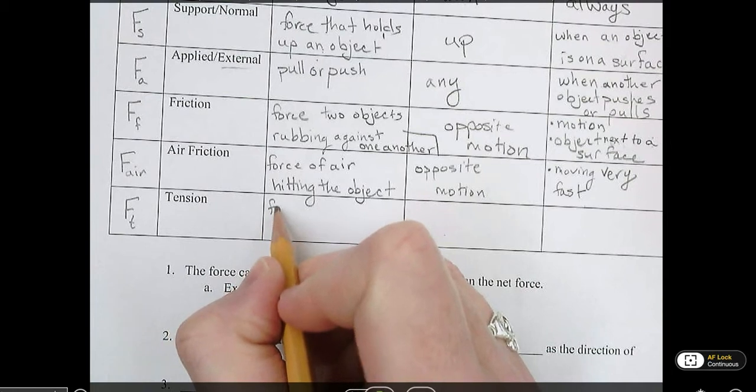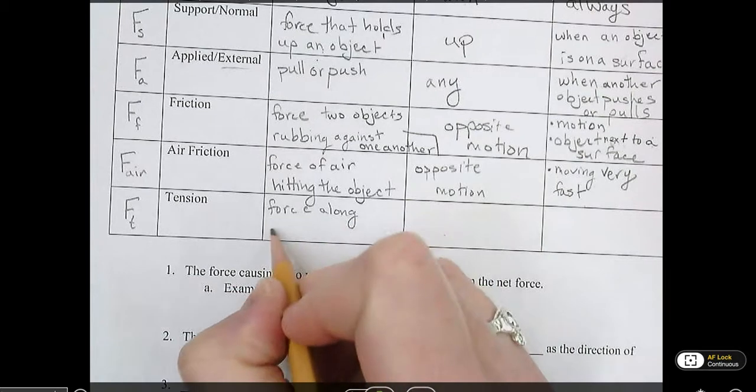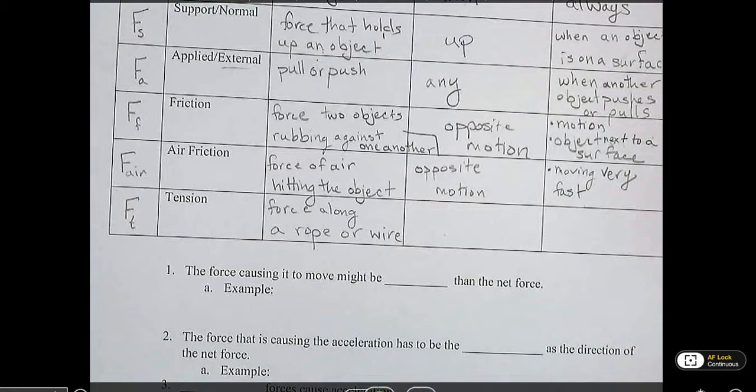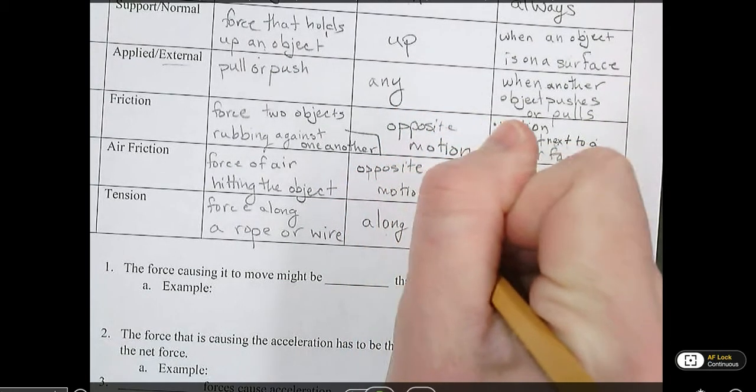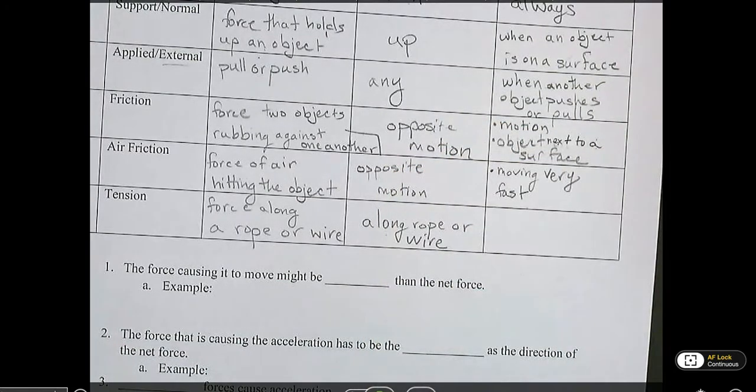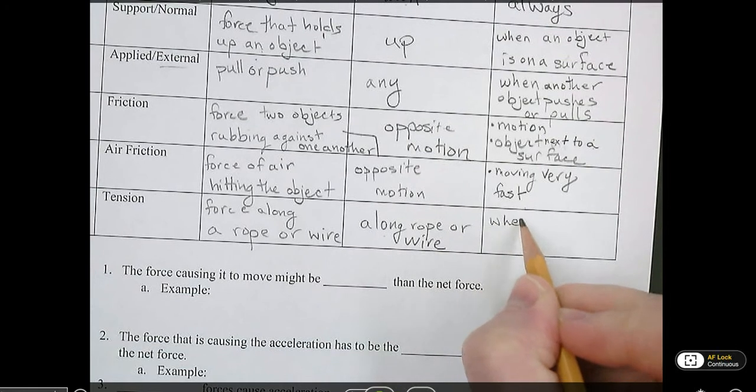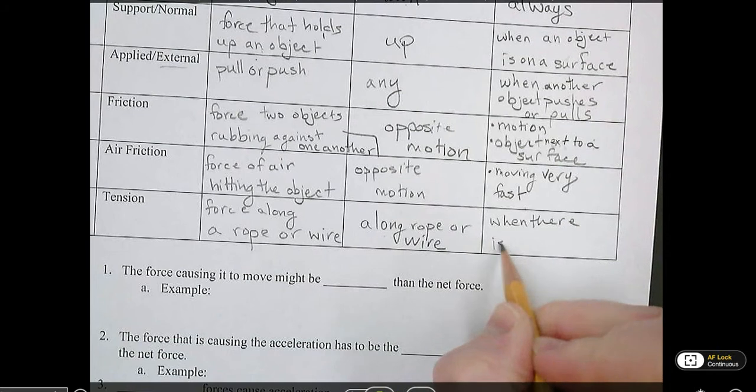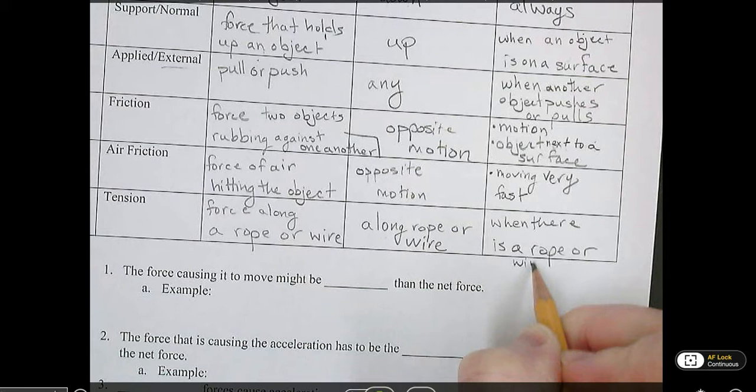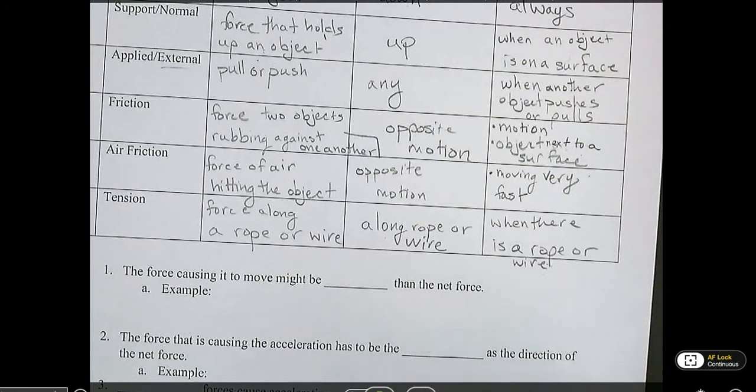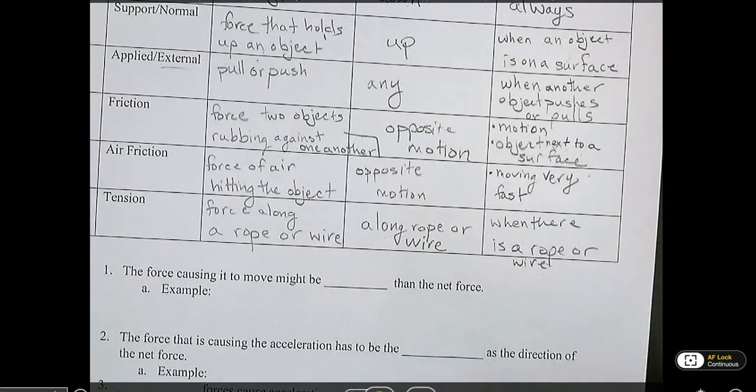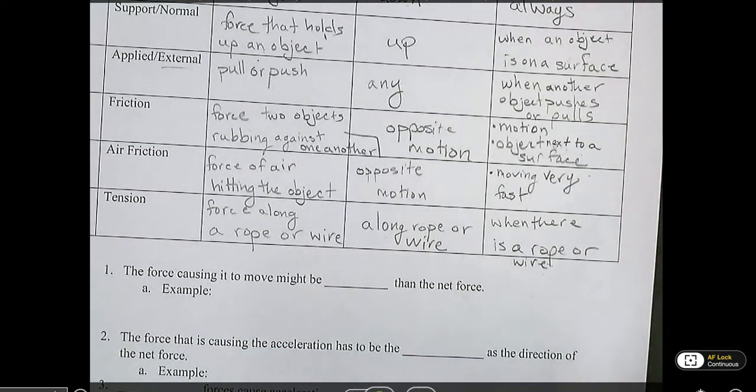Ft is the force along a rope or wire. Which direction does it push or pull? Along the rope or wire. Again, these are just general things. It could be on a backpack strap or something like that, but that's sort of just a general idea. When is it present? When there is a rope or wire. Now that's sort of general, but I will say that there has to be a force along that rope or wire. There can't just be, like in our lab we're doing, there's a lot of wires, but there's not tension. We're not pulling on the wires to make the cart move.